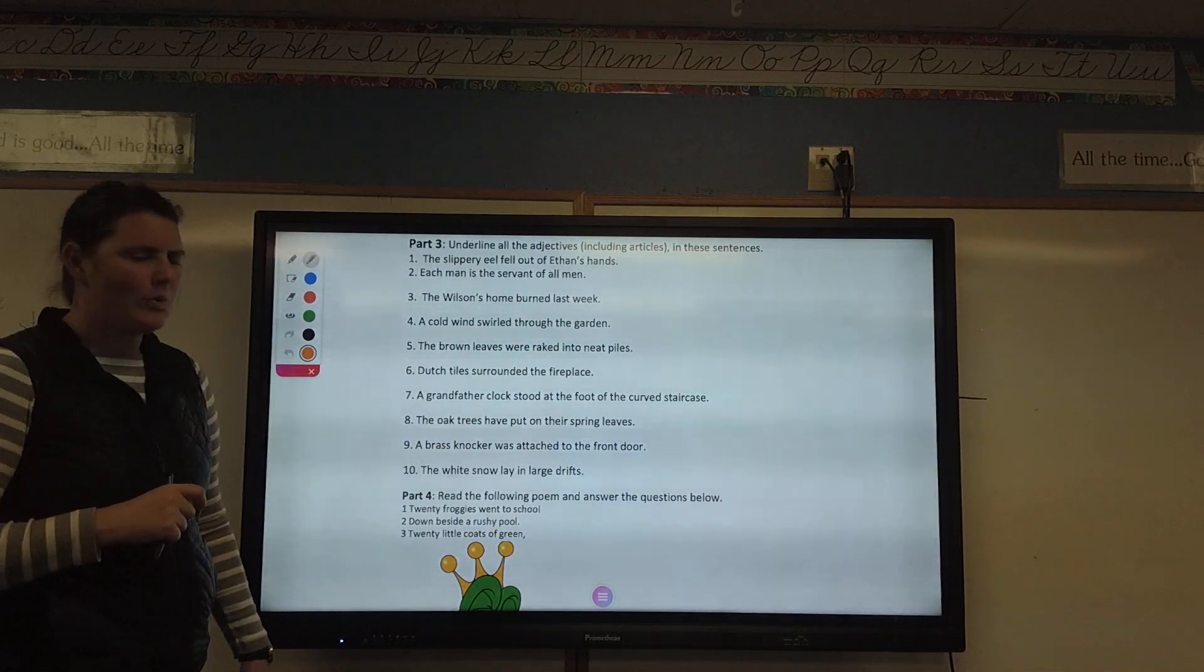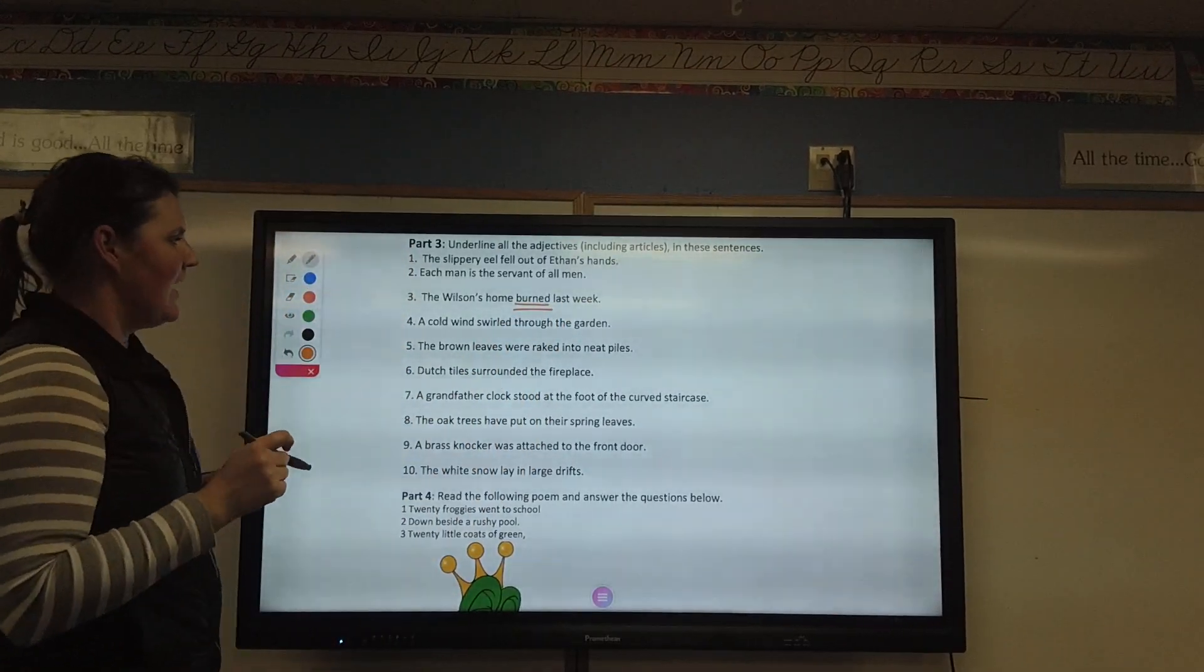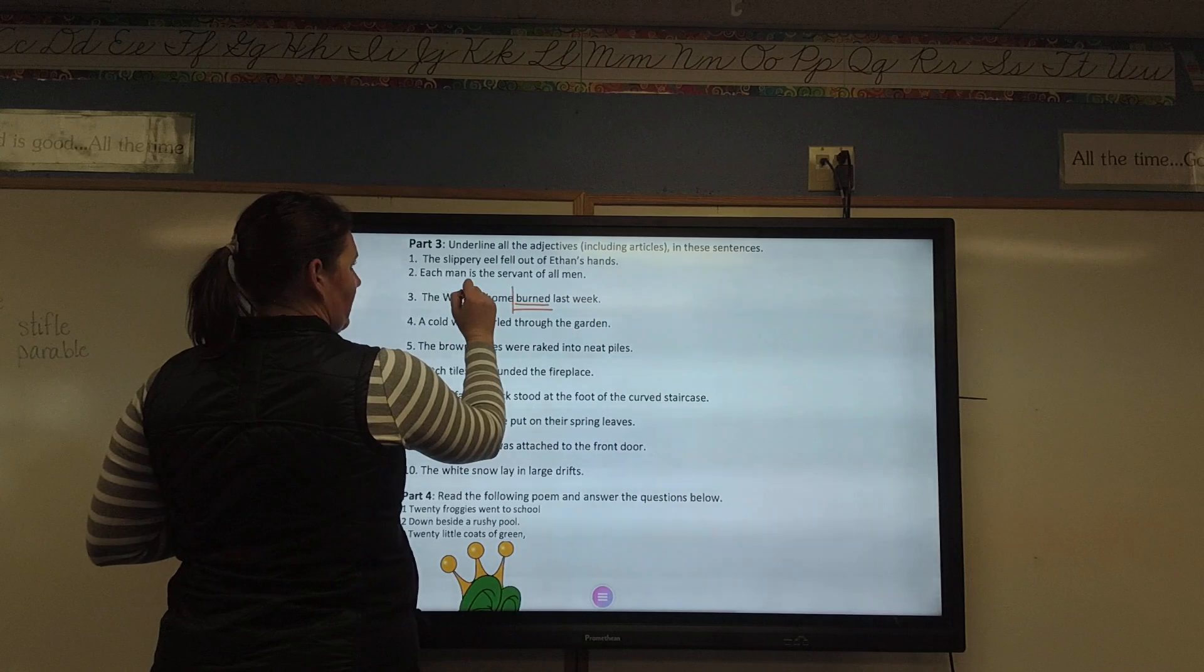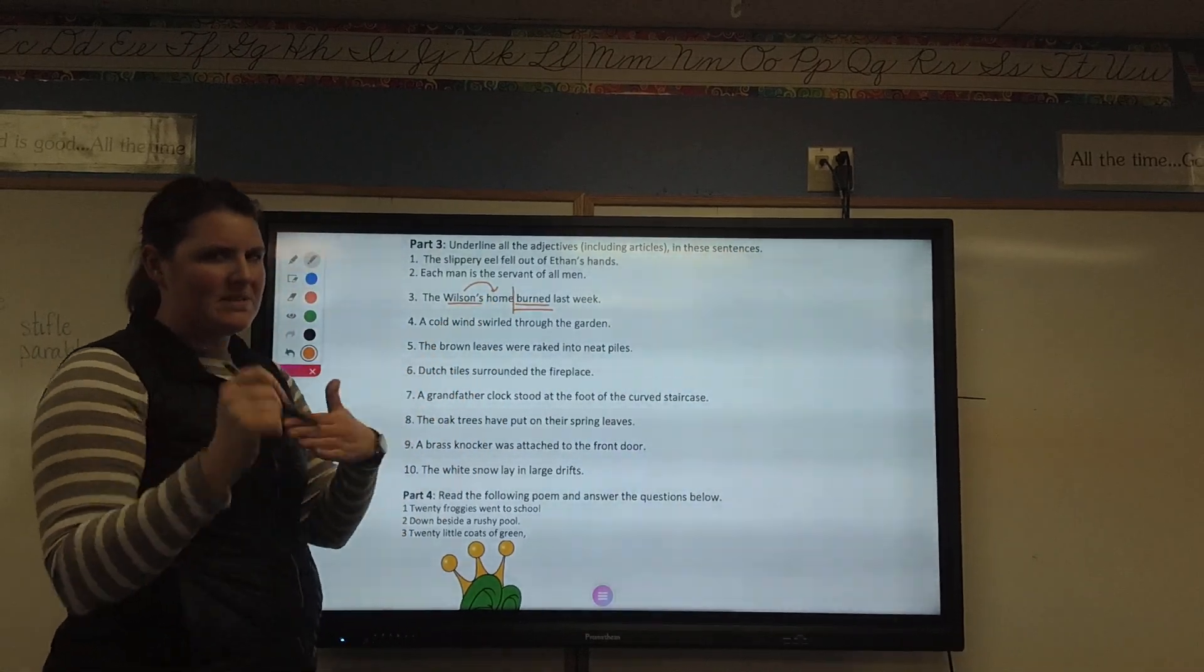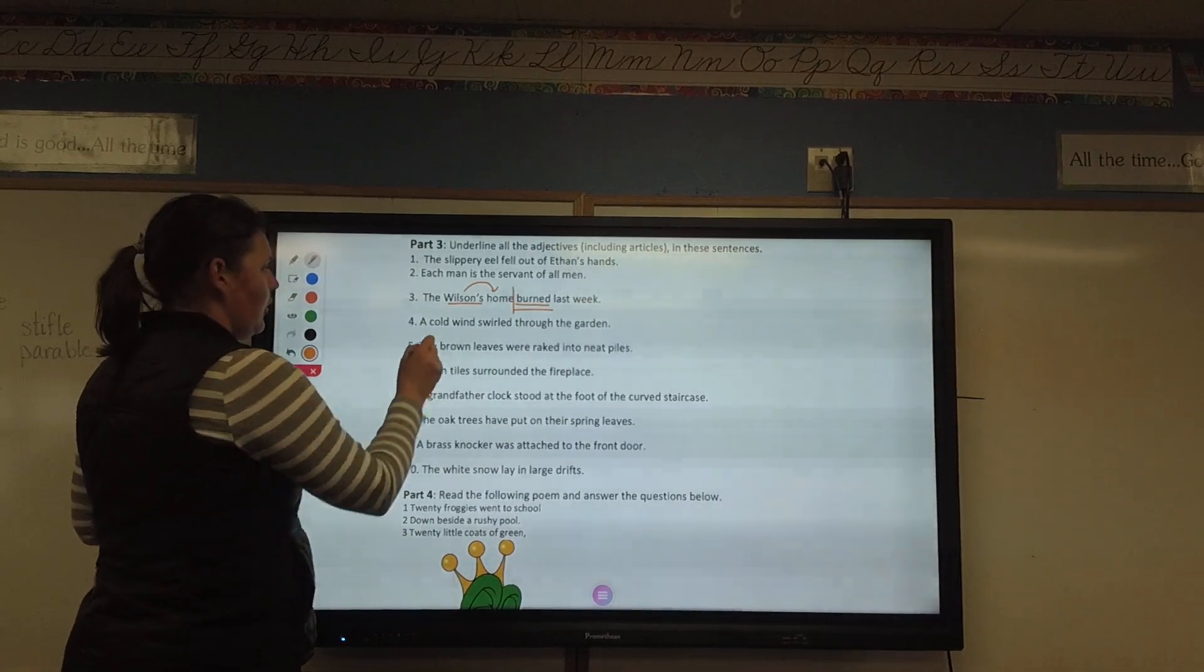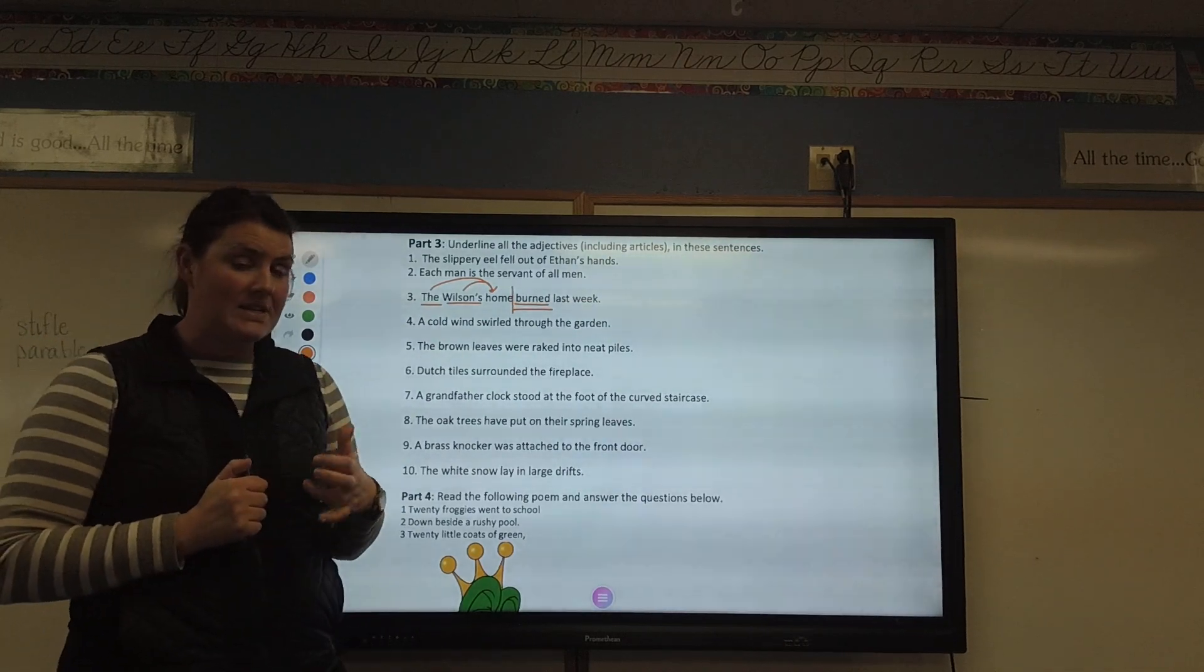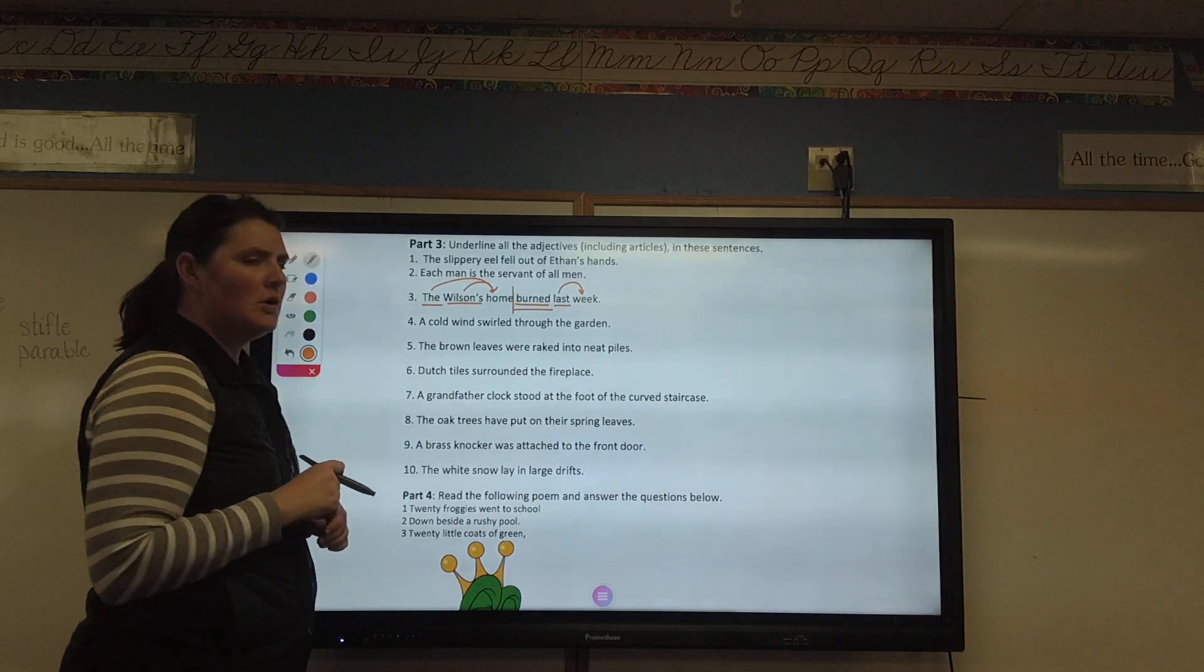Let's do number three. The Wilson's home burned last week. Burned is my verb, so I know that's not going to be it. But I know that in that case, that means that home is going to be a person, place, thing, or idea. And whose home, the Wilson's home. Do I need to put an arrow? I don't, but just for ease of to make myself be consistent, I will. But in what you turn in, you do not have to. And which home, the home. And then there's one more in that sentence, actually. Because week is a person, place, thing, or idea. It's an amount of time. Which week? Last week. There's part three.